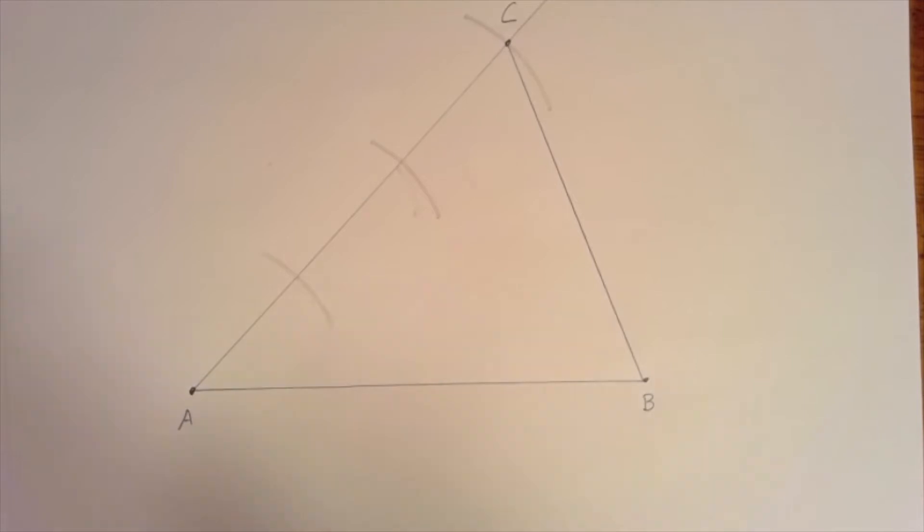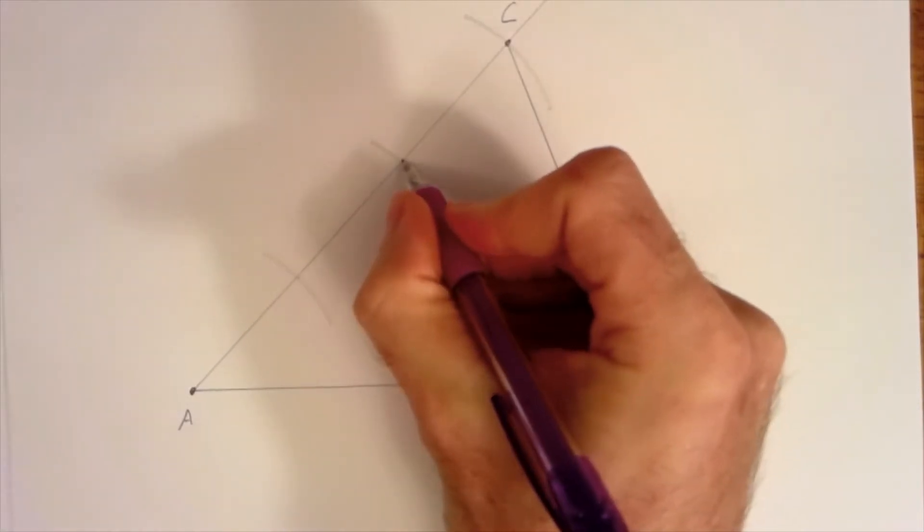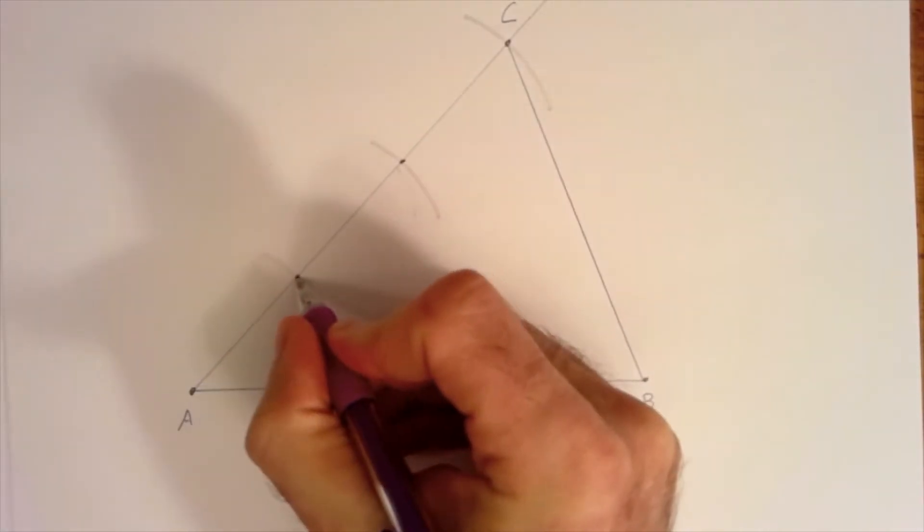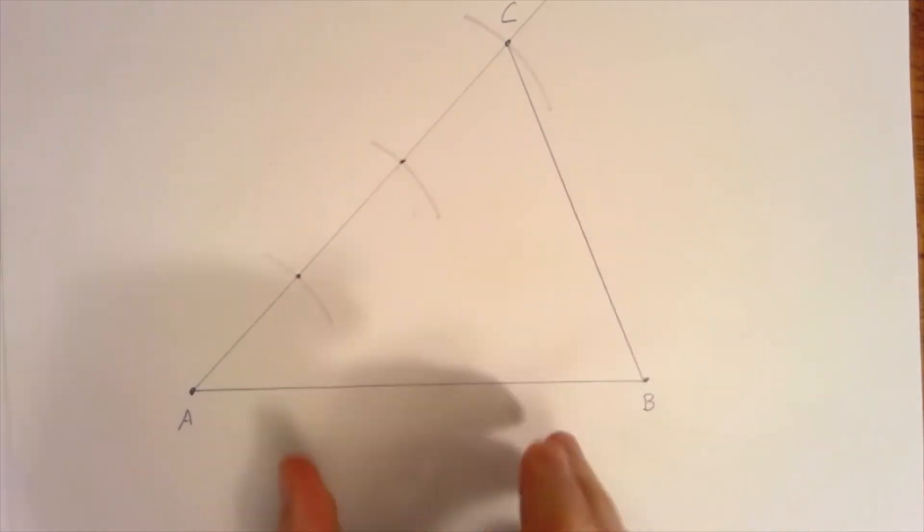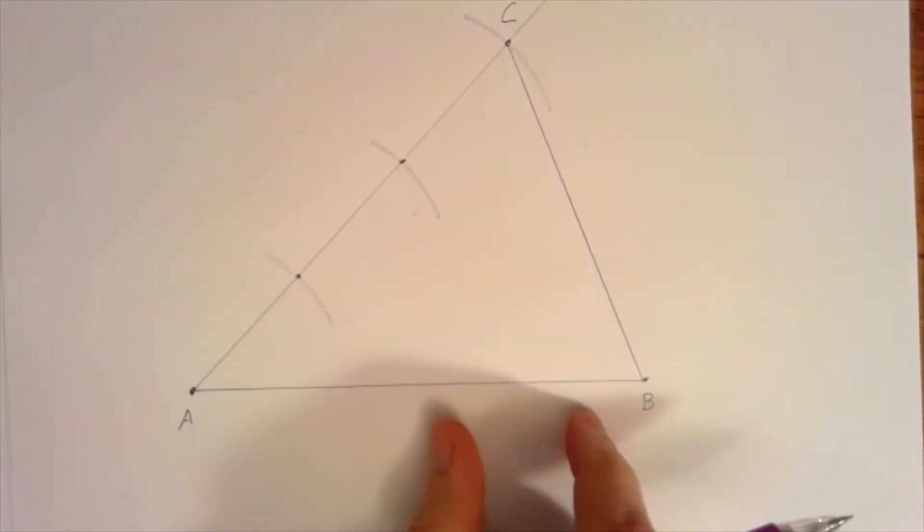So we're going to make parallel lines to CB from this point here and this point here. And where those parallel lines meet down here those are all going to be equal segments and then we'll have trisected this line.